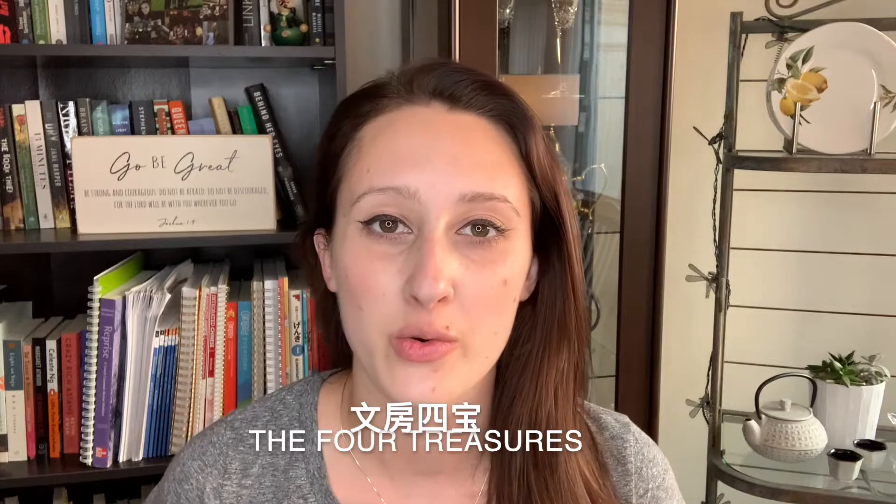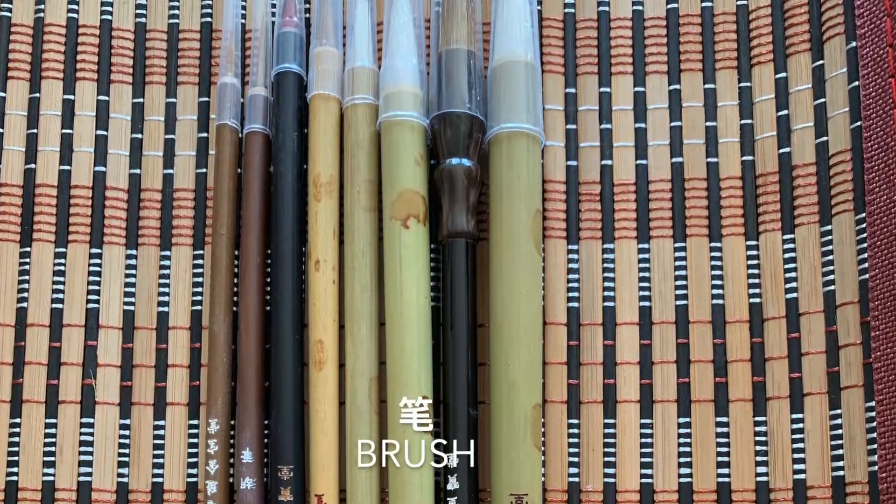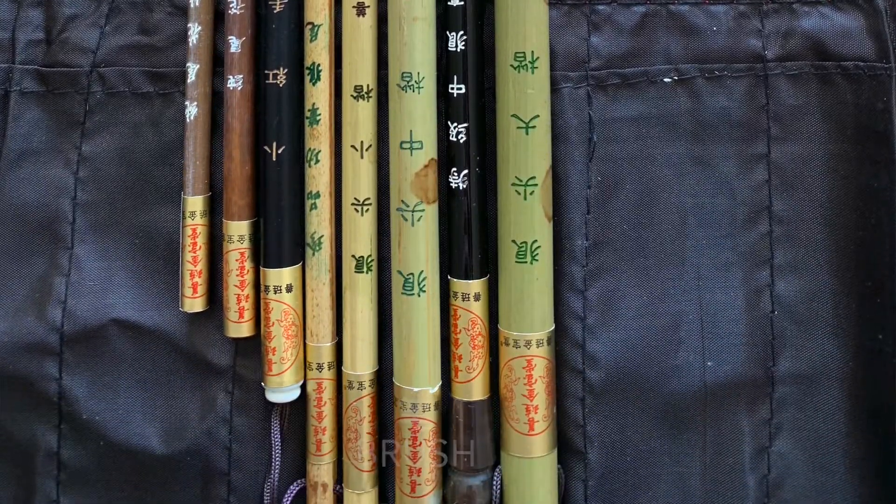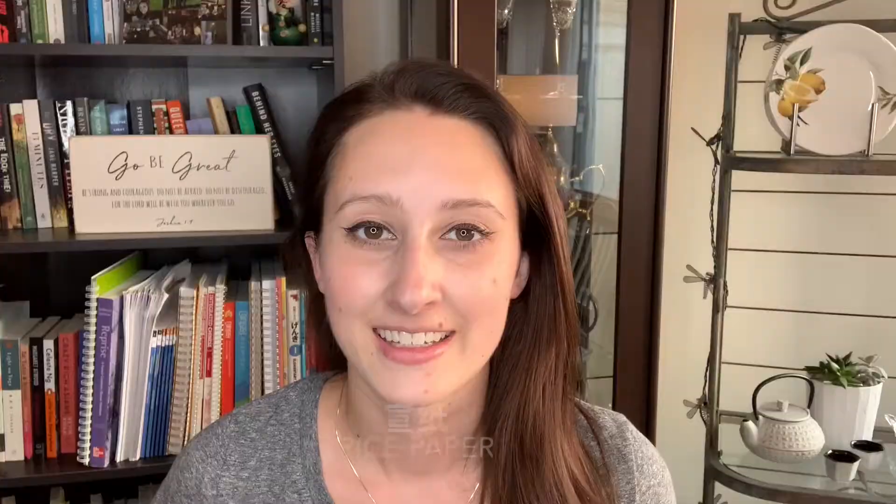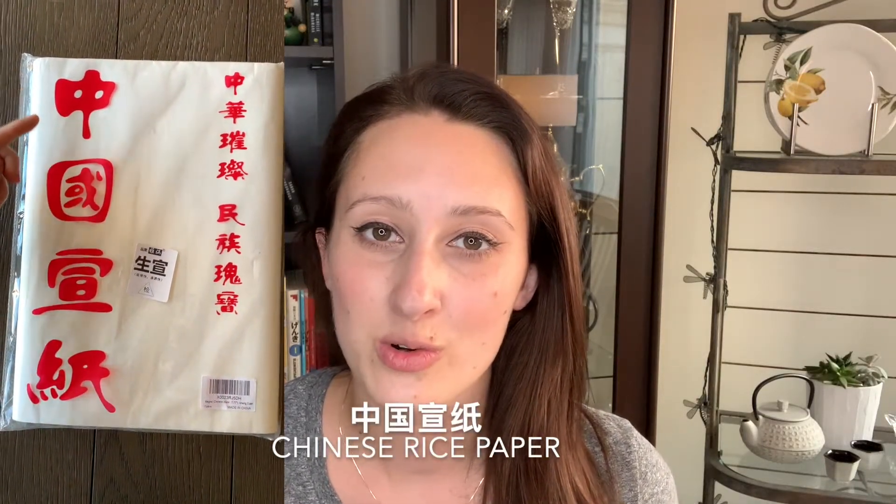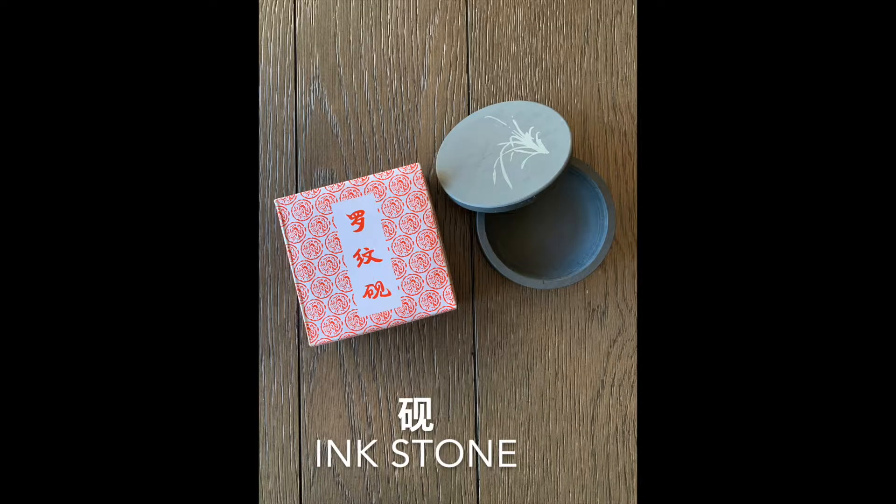So the materials that you need to do Chinese calligraphy with are known as the Four Treasures, or Wenfeng Sebao. The first of these four treasures is the brush, or Bi. The second is the ink, or Mo. The third is the rice paper, or Xuanzhi. Here it reads Zhongguo Xuanzhi, or Chinese rice paper. The last is the inkstone, or Yan.